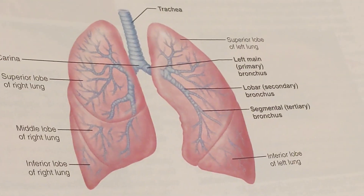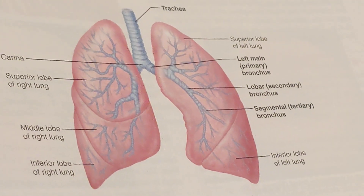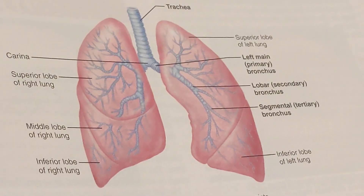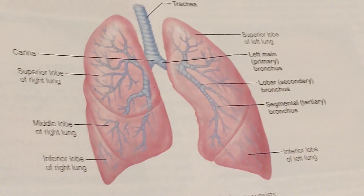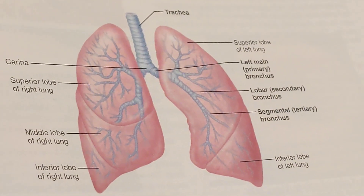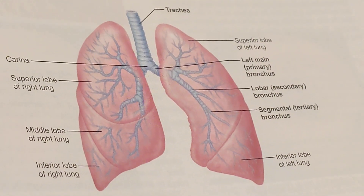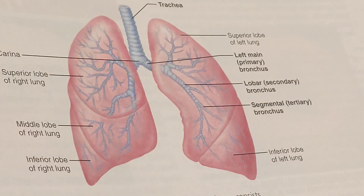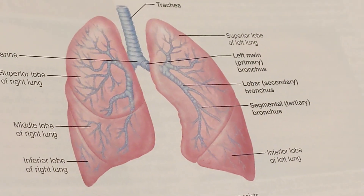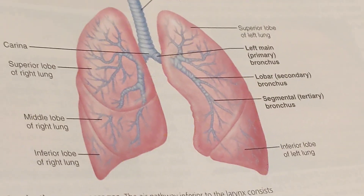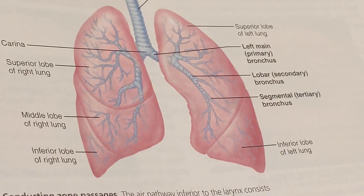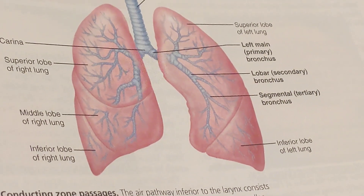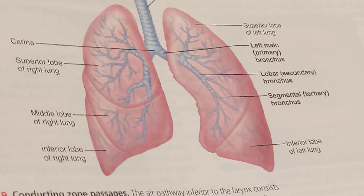Forced expiration is an active process produced by contracting abdominal wall muscles, primarily the oblique and the transversus muscles. These contractions increase the intra-abdominal pressure, which forces the abdominal organs upward against the diaphragm. The contractions in the internal intercostal muscles depress the ribcage and also help to decrease thoracic volume.